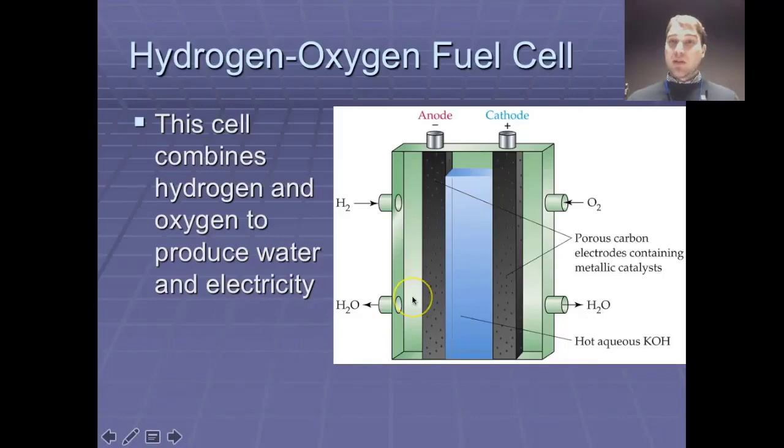So here's a picture of a hydrogen-oxygen fuel cell and a bit of an idea about how it works. You pump hydrogen in one side, you use oxygen from the air in the other side. The hydrogen splits and produces electrons. Those electrons travel through the external circuit and you can use them to power something.